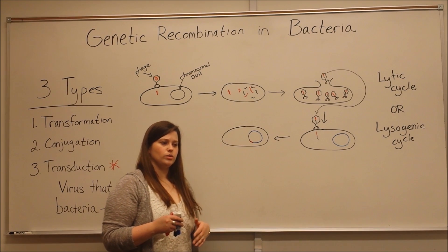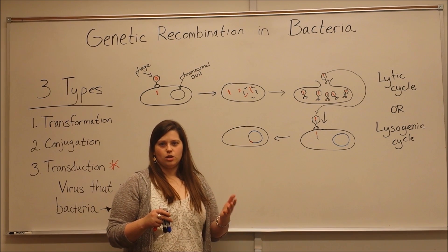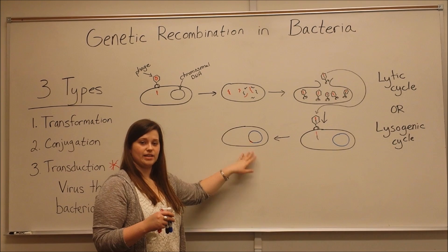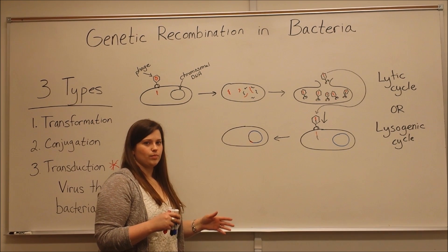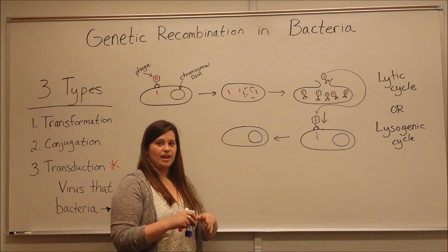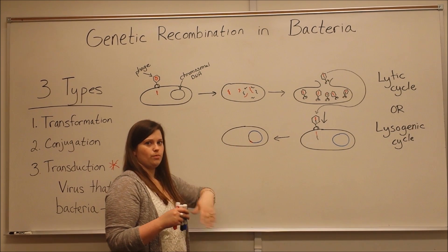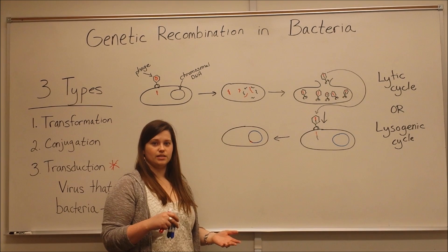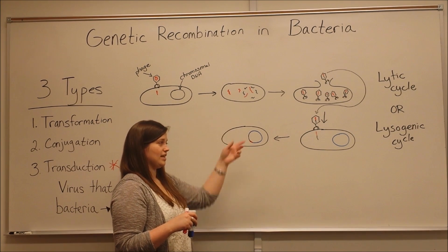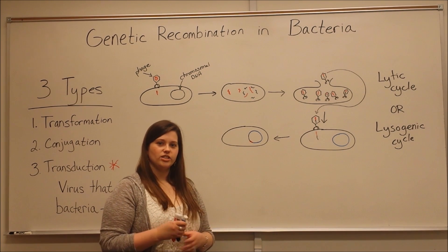If this DNA includes genes for toxin production, virulence factor production, or proteins that allow the cells to be resistant to certain types of antibiotics, then this recombinant cell has picked up these new functionalities. And that's how the process of transduction works. It's always possible that the phage DNA may excise and re-enter the lytic cycle, but bacteria cells can go through many generations and many cell divisions before that happens. That is how the process of transduction plays a role in genetic recombination in bacteria.